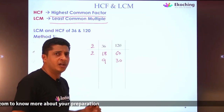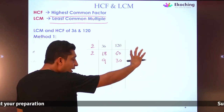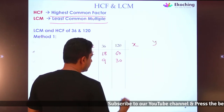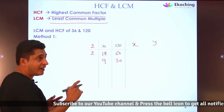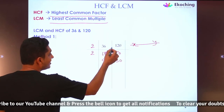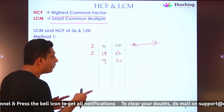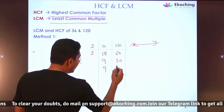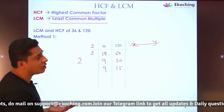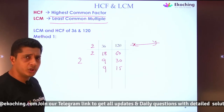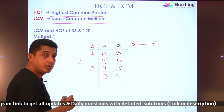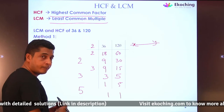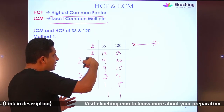We divide again by 2, getting 9 and 30. Now, 9 is not divisible by 2, only 30 is, so I put 2 slightly outside to indicate dividing just one number — giving 9 and 15. Neither 9 nor 15 is divisible by 2, so we try 3. 3 divides both, giving 3 and 5. Then 3 divides only 1 of them, and 5 divides only 1. We stop when we reach 1 and 1.